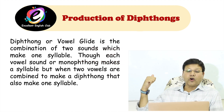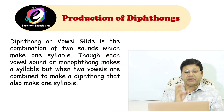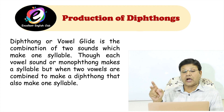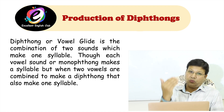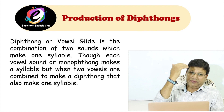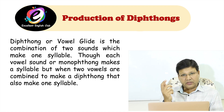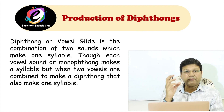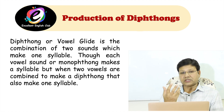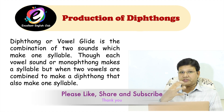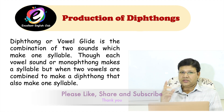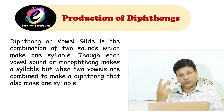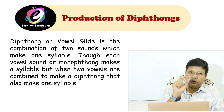A diphthong or vowel glide is the combination of two sounds which make one syllable. As I told you in my previous lectures, a syllable is a word or part of a word which is spoken in one stroke of chest pulse — for example, 'two' is one syllable, 'today' is two syllables, and 'tomorrow' is three syllables.